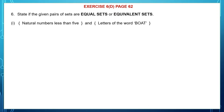Question 1: natural numbers less than 5, and letters of the word 'boat'. These are the two sets. We have to see if these two sets are equal sets or equivalent sets. So let's write down in roster form the elements of the first set — natural numbers less than 5 — and the elements of the second set, letters of the word 'boat'. We get 1, 2, 3 and 4 as the first set.